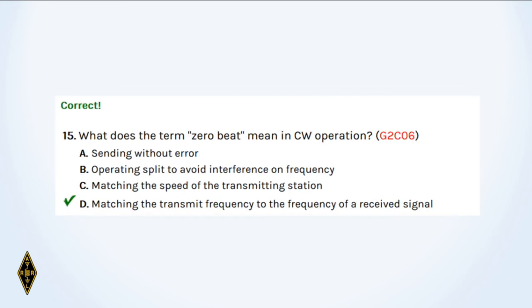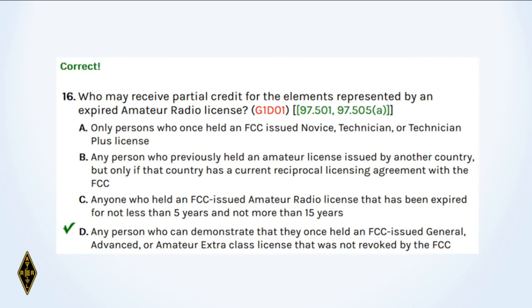And fifteen: What does the term zero beat mean in CW operation? It means matching the transmit frequency to the frequency of the received signal — you're coming in to zero and the heterodyning beats down to zero. And sixteen: Who may receive partial credit for the elements represented by an expired amateur radio license? Any person who can demonstrate they once held a general, advanced, or extra class license not revoked by the FCC, by taking the technician test — element two — again.